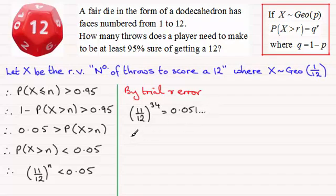If you do it to power 35, 11/12 to the power 35, then you get 0.047 and so on. So clearly you can see that you need 35 or more.